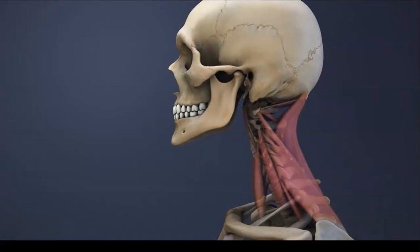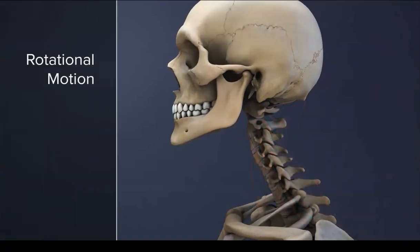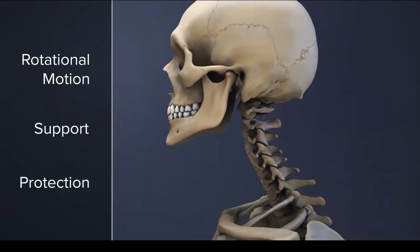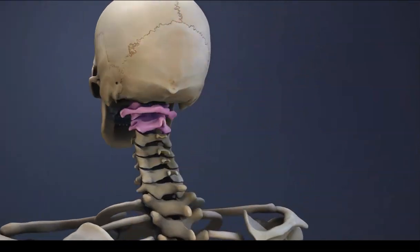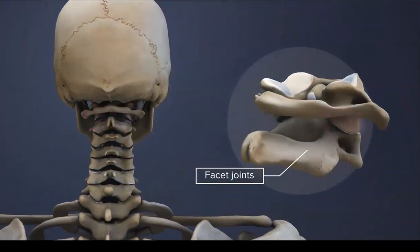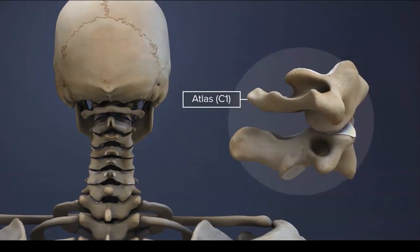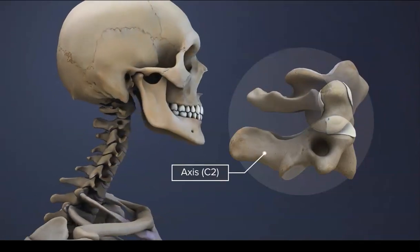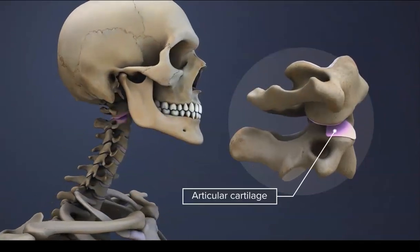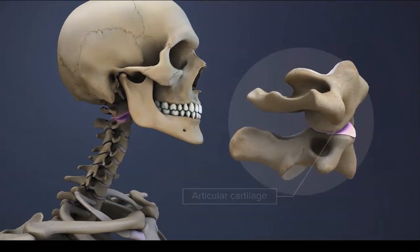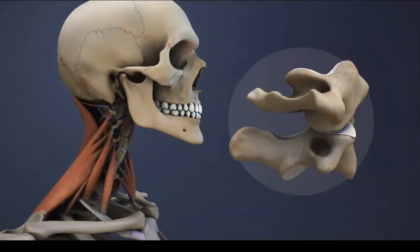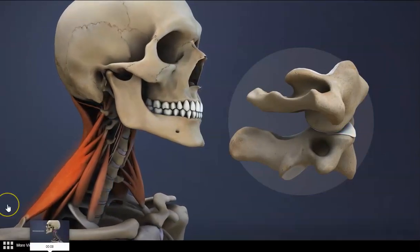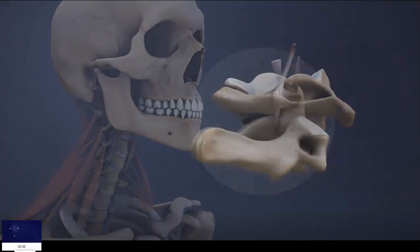This segment provides rotational motion, supports the head, and protects the spinal cord and nerve pathways. The C1 and C2 vertebrae are connected in the back by a pair of facet joints. The ring-shaped atlas rotates around the dens, which is the peg-like bony projection of the axis. Articular cartilage enables smooth movements around the dens and within the facets, while muscles, tendons, and ligaments help hold the vertebrae together. A strain or tear to any of these tissues can cause neck pain and stiffness.